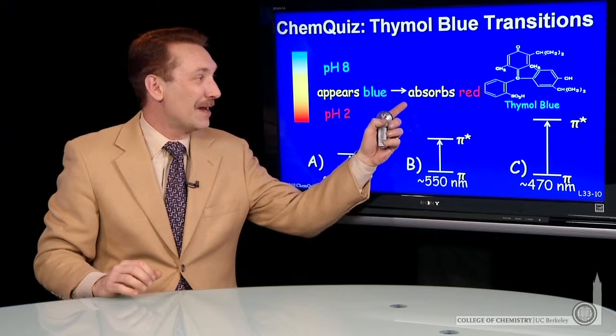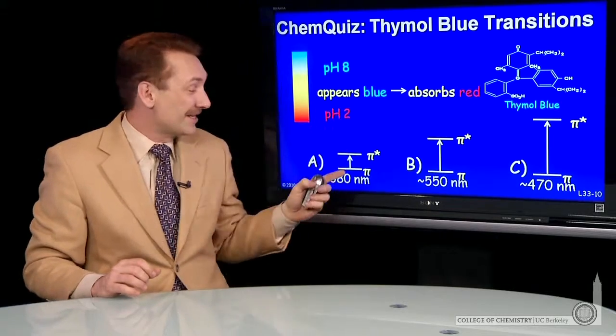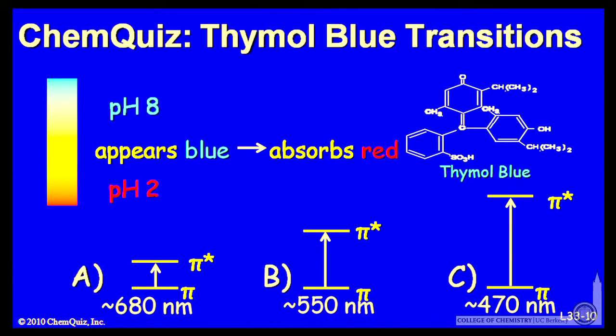So thymol blue at pH 10 appears blue and absorbs in the red. That's the lowest energy of these three transitions, around 680 nanometers. pH 10: blue form, absorbance in the red.